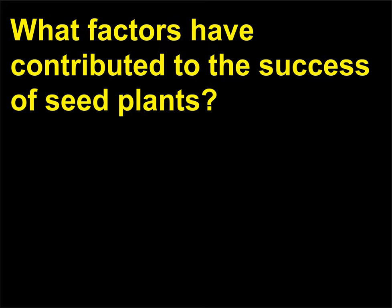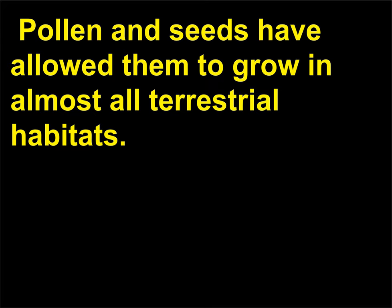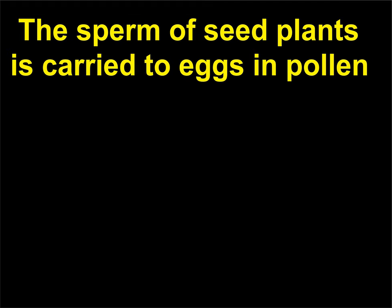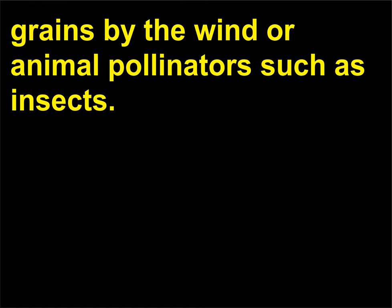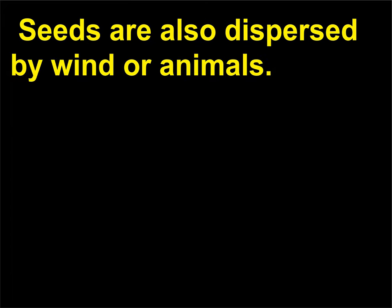What factors have contributed to the success of seed plants? Seed plants do not require water for sperm to swim to an egg during reproduction. Pollen and seeds have allowed them to grow in almost all terrestrial habitats. The sperm of seed plants is carried to eggs in pollen grains by the wind or animal pollinators such as insects. Seeds are fertilized eggs protected by a seed coat until conditions are proper for germination and growth, and seeds are also dispersed by wind or animals.